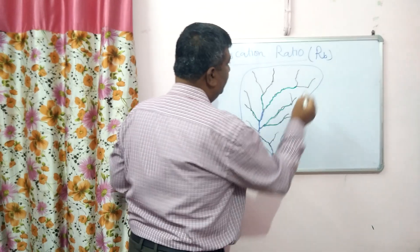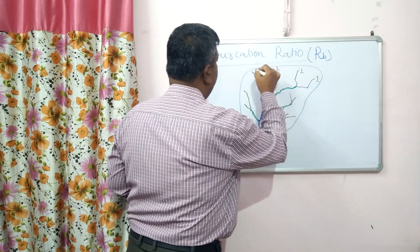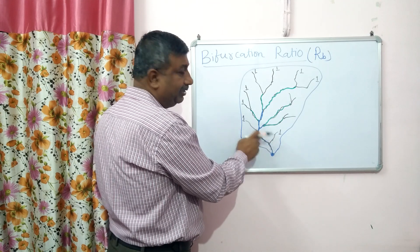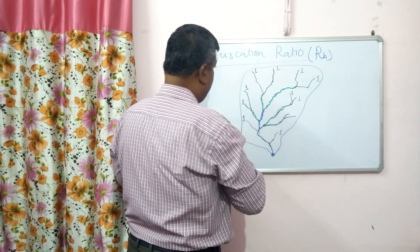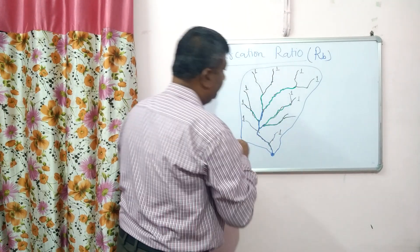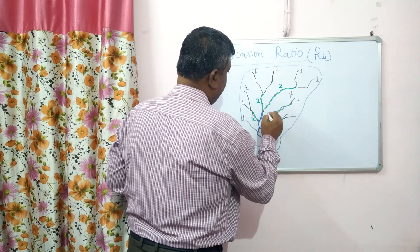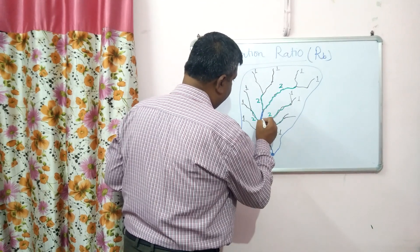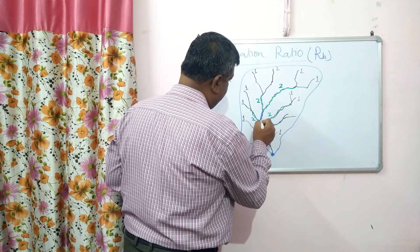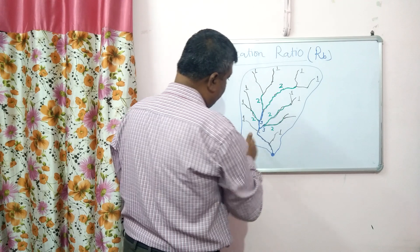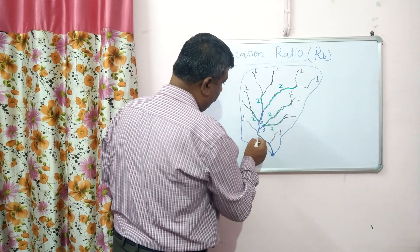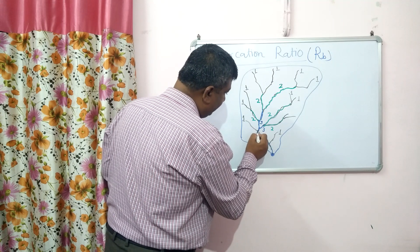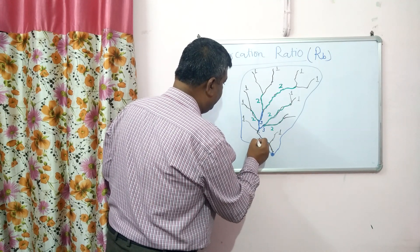These are first order streams. When first order streams directly meet without forming a higher order, the order stays the same. Two second order streams combine to form a third order stream. There are two third order streams. These two third order streams meet to make the fourth order stream. So there are four stream orders in this watershed.